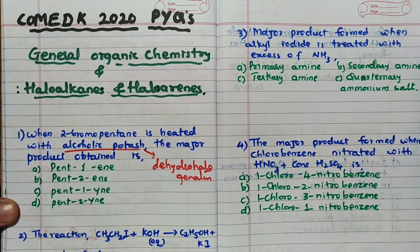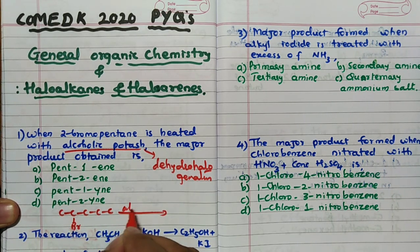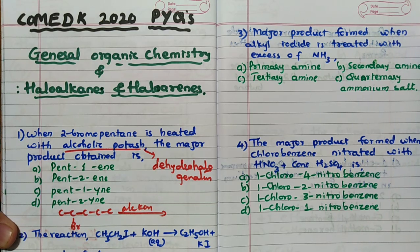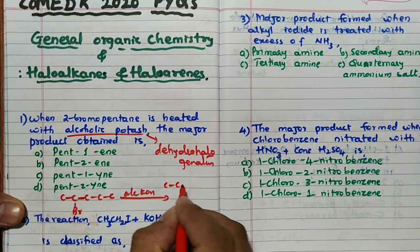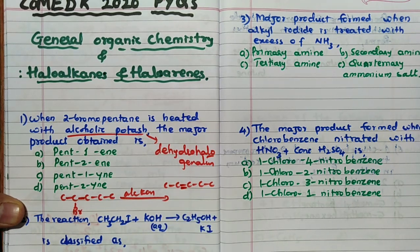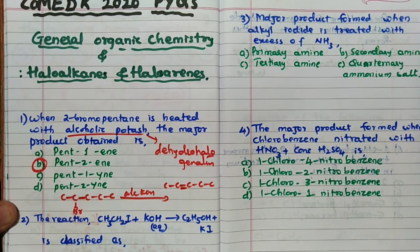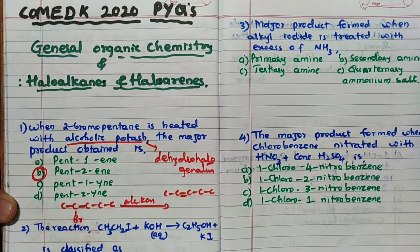2-bromopentane, in skeletal structure, when it undergoes reaction with alcoholic KOH, according to Zaitsev's rule the double bond forms at the more substituted position — the highly substituted alkene is the major product. Hence the product is pent-2-ene. If you have already solved KCET questions on this, it will be very simple.